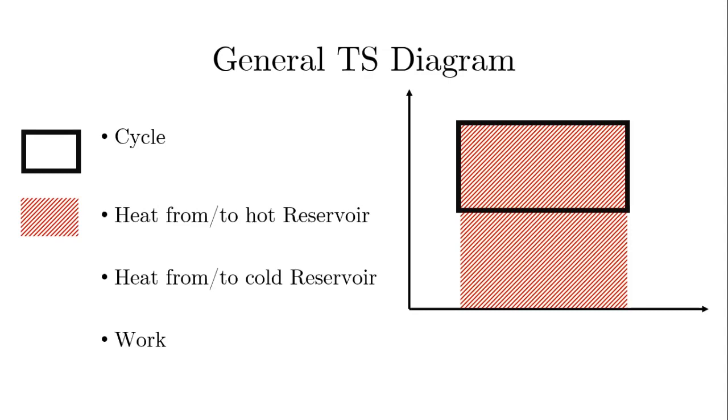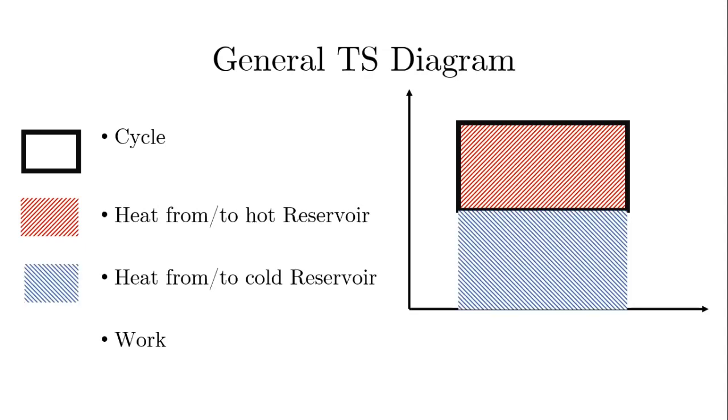The total heat that I get out of the hot reservoir. The area under the cycle is the heat from or to the cold reservoir. And if I subtract them, meaning I'm just looking at the red rectangle that remains, that's going to be the work.